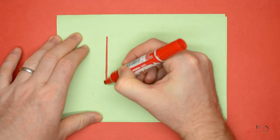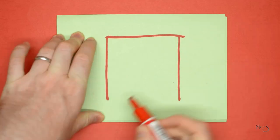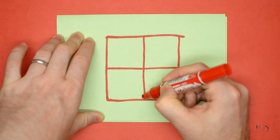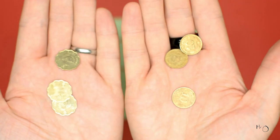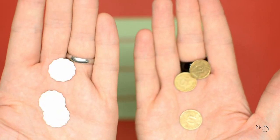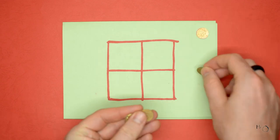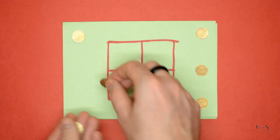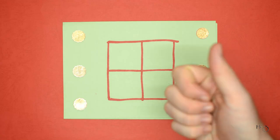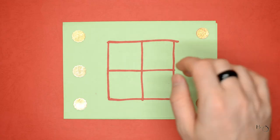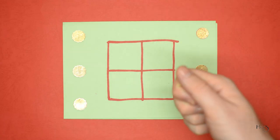To play Three Men's Morris, you need a board like this that you can draw yourself, six pieces in two different colors or two different shapes—I'm using these old coins—and you need a friend. I said a friend!